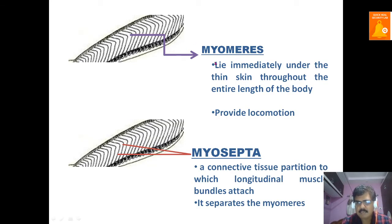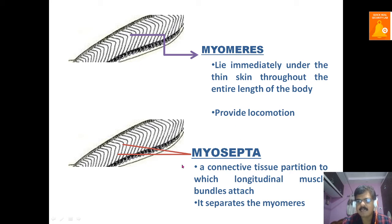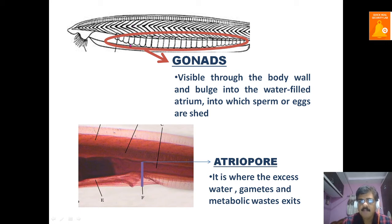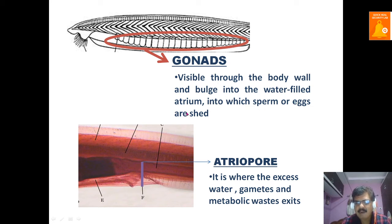The myomeres lie immediately under the thin skin throughout the entire length of the body and help in locomotion. The myosepta are connective tissue partitions between the myomeres that separate them. The myomeres are V-shaped structures or muscle bands. On the ventral side, the gonads are visible through the body wall and bulge into the water-filled atrium, into which sperm or eggs are shed.